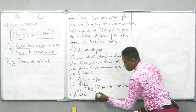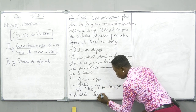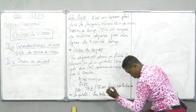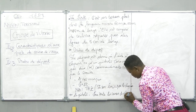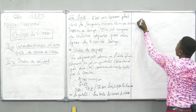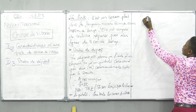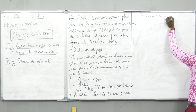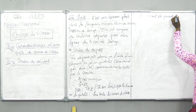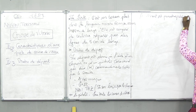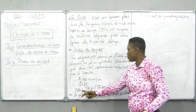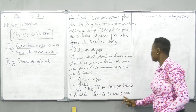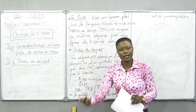Et donc, pour toutes les courses de vitesse, le départ est quadripédique. Le T n'est pas un commandement, mais c'est le signal émis par le claquoir ou par le pistolet. Pour toutes les courses de vitesse, le départ est quadripédique, c'est-à-dire les quatre appuis au sol.